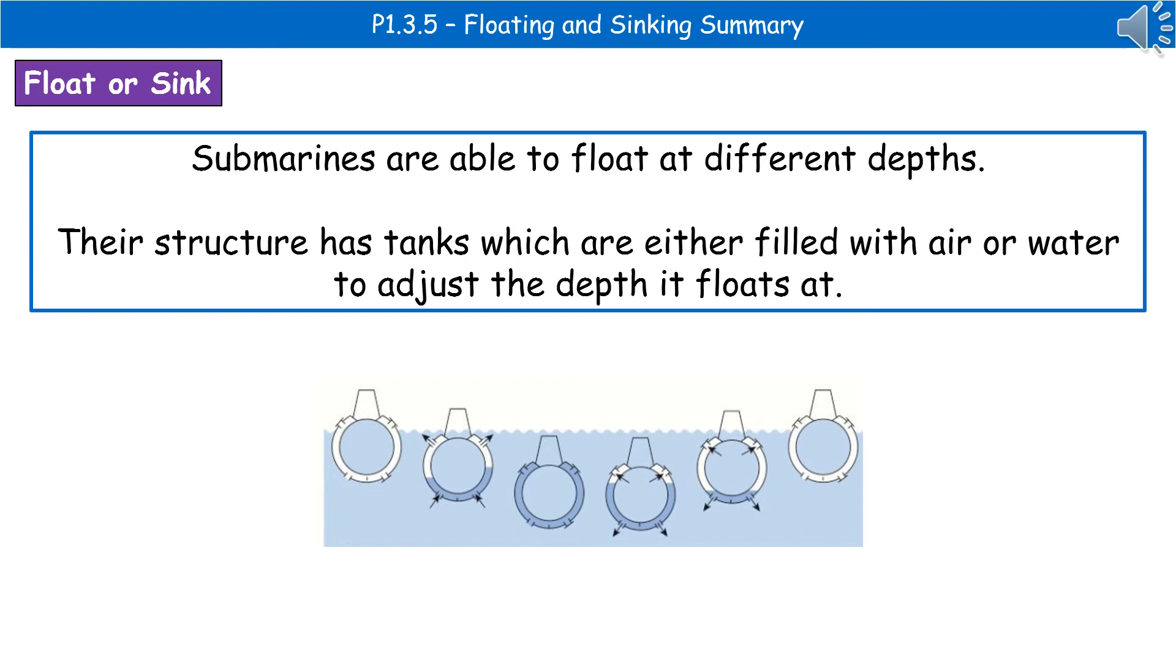When we're then considering the question of why is it that some objects float and others sink, then we also come into the idea that we can change the depth at which certain things float and sink. We already know that an object will float if upthrust equals the weight. If we, however, wanted something to float at a different depth, we can achieve that.